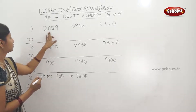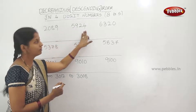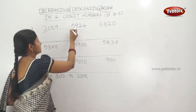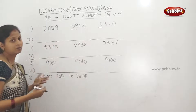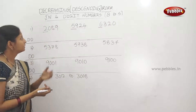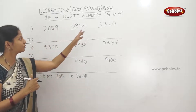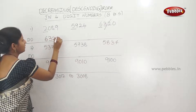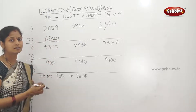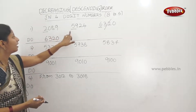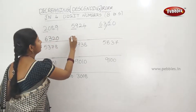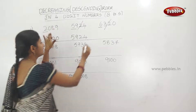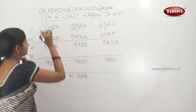First descending example: 2,089; 5,924; 6,320. Comparing first digits: 2, 5, 6. The biggest first digit is 6, so 6,320 is the biggest number. Then 5,924 is next. The smallest is 2,089. Descending order: 6,320; 5,924; 2,089 — biggest to smallest.